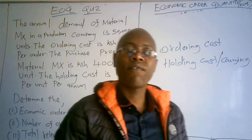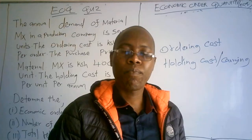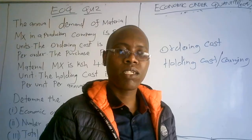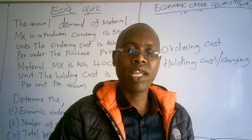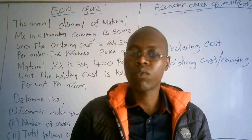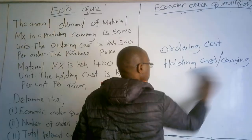That's why we need to know the economic order quantity, which minimizes the cost of holding or storing that stock. Similarly, if we have less stock in our company, we are going to incur the cost of making orders. So we must have that quantity — the economic order quantity — that minimizes both the ordering cost and the holding cost.